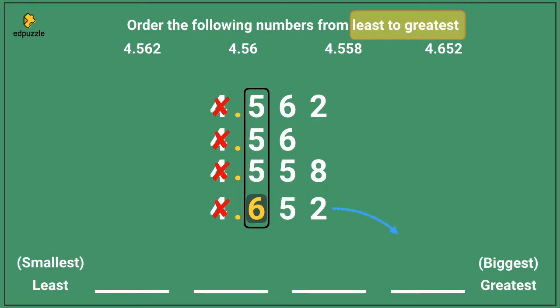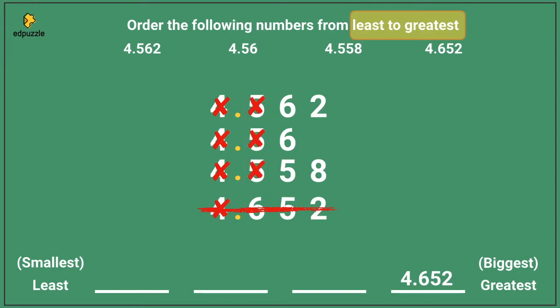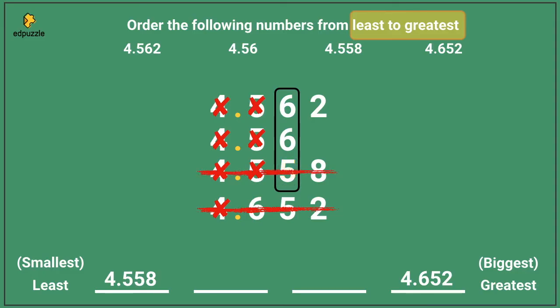I will put 4.652 into the spot on the greatest or biggest side. Now that I've placed the number, I can cross the whole thing out — I don't need it anymore. The rest of the 5s can be crossed out because they are the same digit. Then I can check my next place value. Here I have a 6, a 6, and a 5. The 5 is different — 5 is smaller than 6, so 4.558 must be smaller than the others. I will go ahead and place it on the smallest or least side and cross out the number. The rest of those 6s can be crossed out and we can keep moving.